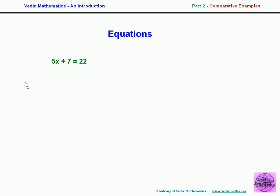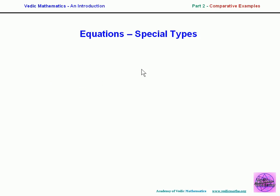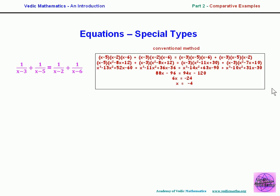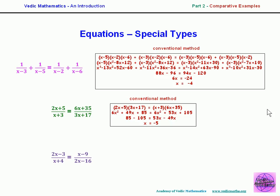For equations in general, the Vedic system favors getting the answer in one line — solving by subtracting 7 and dividing by 5, for example. There are also special types of equation in the Vedic system not present in the conventional system. Solving a special-type equation conventionally requires multiplying both sides by two linear terms, expanding, collecting like terms — horrendous. But in the Vedic method, you can write the answer straight down simply by recognizing the special characteristic of the equation.